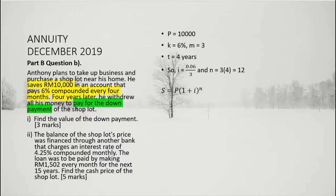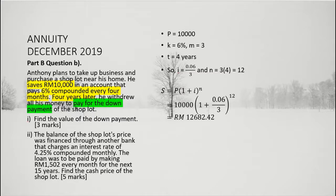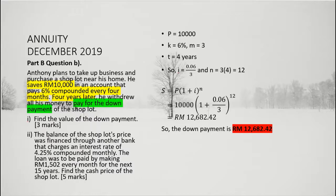Next, we substitute the known information into the compound amount formula. We substitute P with 10,000, i with 0.06 divided by 3, and n with 12. Solving for the maturity value, we have S equal to RM 12,682.42. Thus, the amount withdrawn from the account after 4 years as down payment for his shop lot is RM 12,682.42.